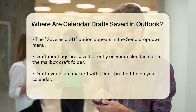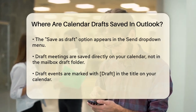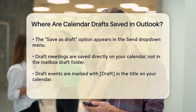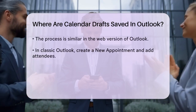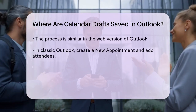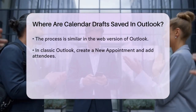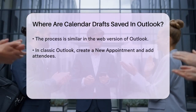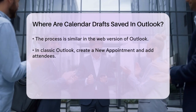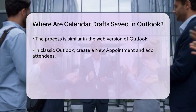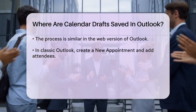The same process applies to the web version of Outlook. You create a new event, add a participant, and then use the Send dropdown to save it as a draft. Again, it will be saved on your calendar, marked as a draft.